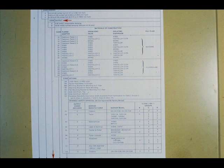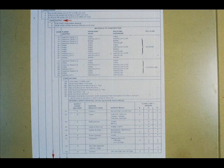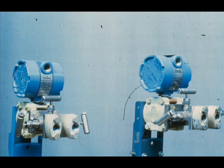The transmitter with 'C' for the output code in the model number has a 4 to 20 milliamp output that is proportional to the square root of the input — it is called a square root of the delta P flow transmitter. Even though it looks like the other transmitters, it has a different amplifier board, calibration board, and a different calibration procedure.